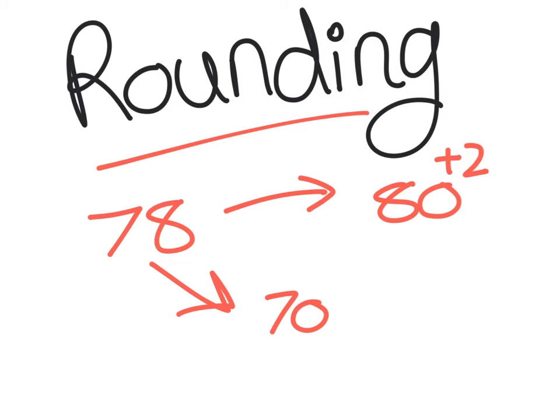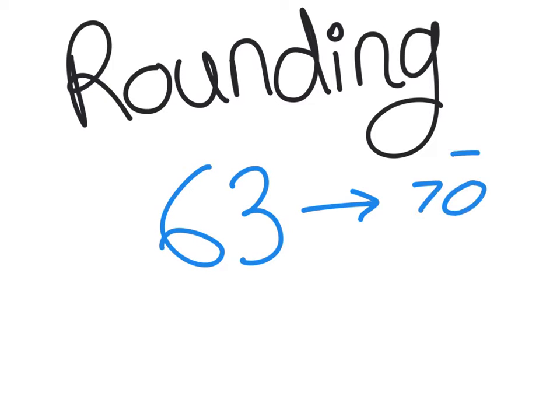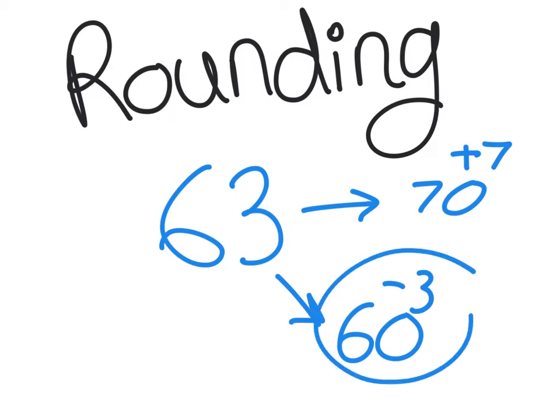And a different number, such as say, 63. We could either change that into 70 by plusing 7, or we could change it into 60 by taking away 3. Obviously this one here is the easier of these two options.